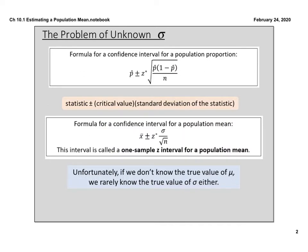Here's our first slight difference. If we are estimating a population mean, that means we don't know the population mean. If we don't know the population mean, then it's not possible for us to know the population standard deviation. Here's where that becomes a slight problem — we use the population standard deviation in our z statistic. We would use that for proportions.